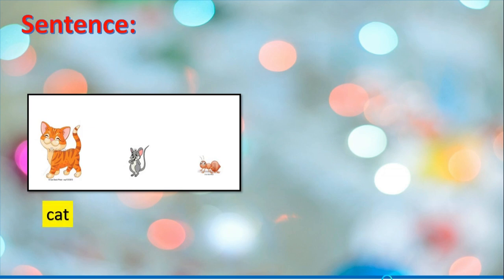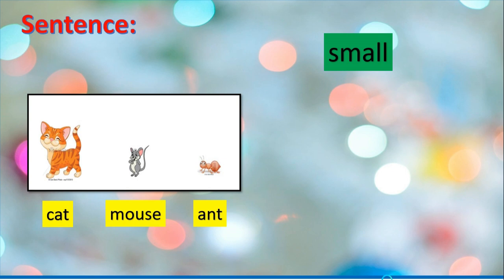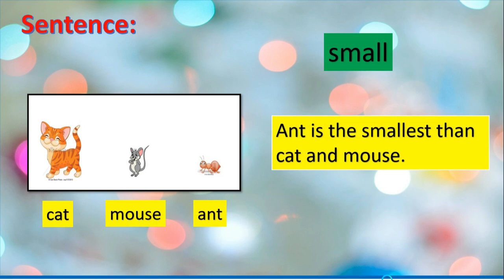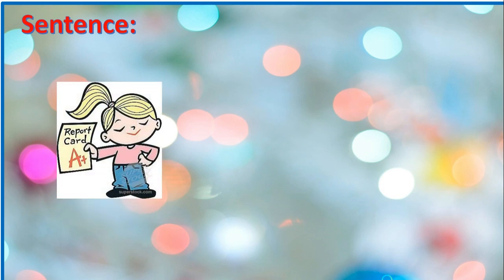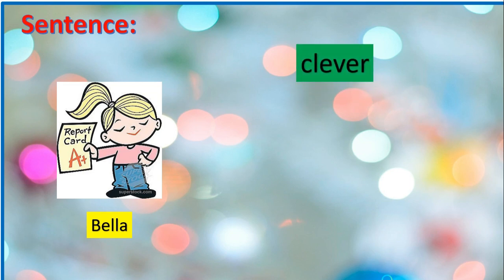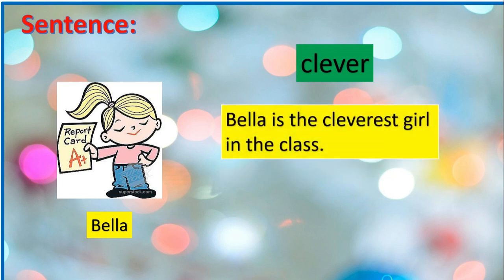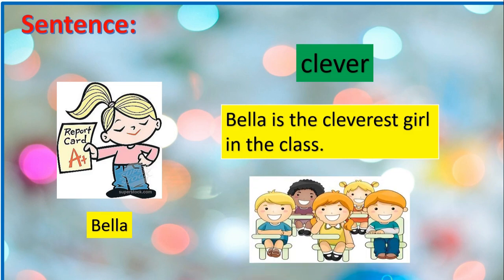This is cat, mouse, and ant. Let's use the adjective small. Who is the smallest — smaller than cat and mouse? And this is Bella. We use the adjective clever. Bella is the cleverest girl in the class. So we compared Bella to the whole class.